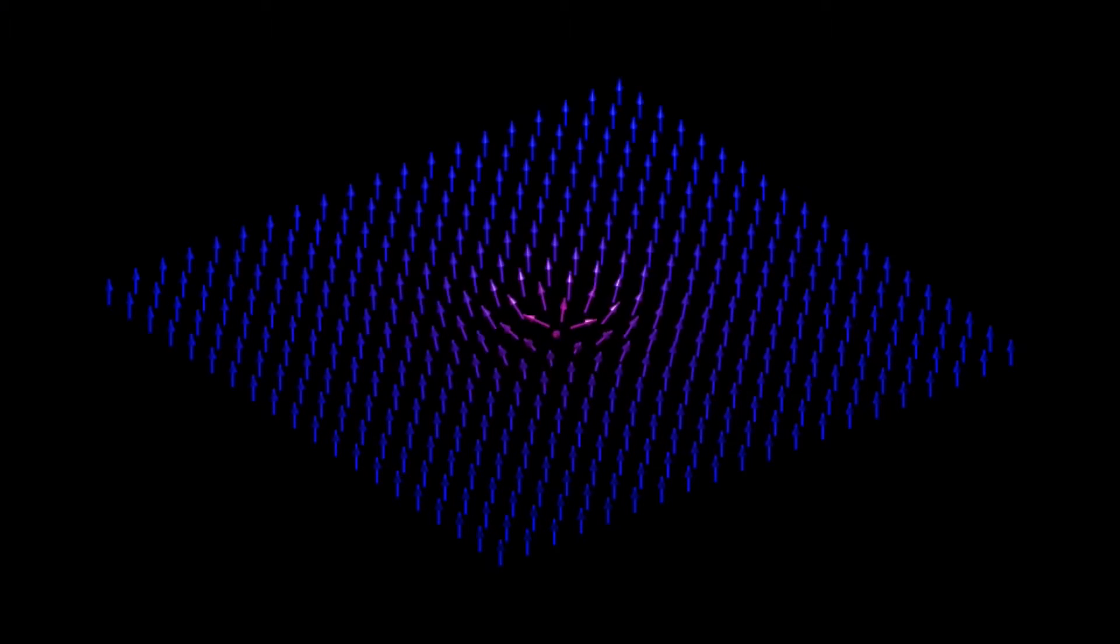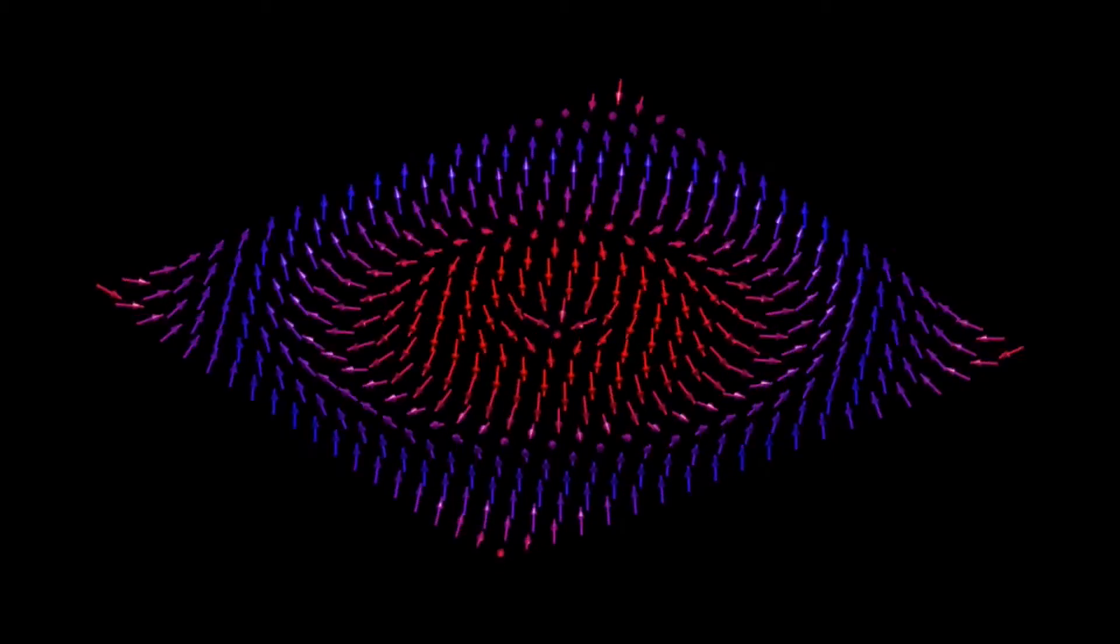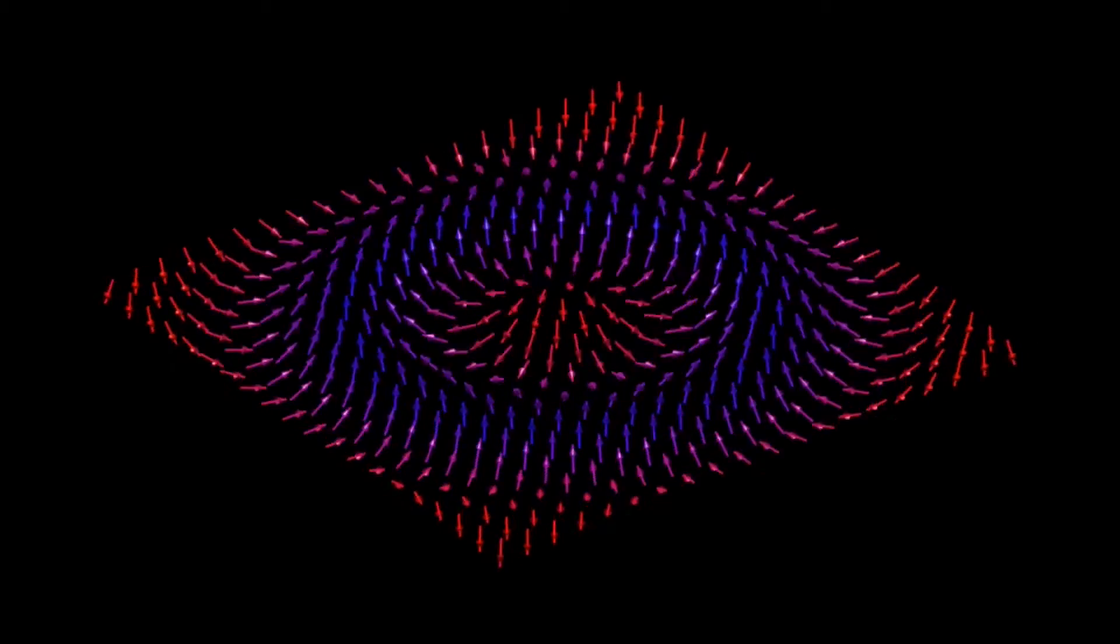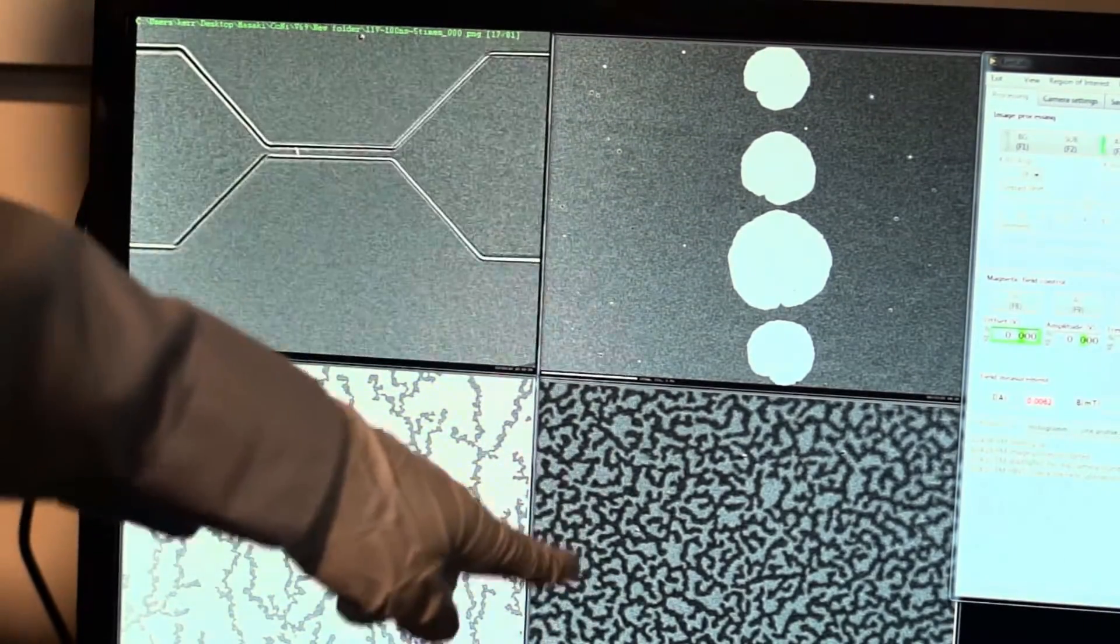So if we look at the spin configuration in a typical magnet, you find all those spins are actually aligned in the same direction. But in some other unique materials, instead of being aligned in the same direction, you actually have a coherent rotation of spins and you get these unique symmetric patterns that show up. And one of them is called a skyrmion.